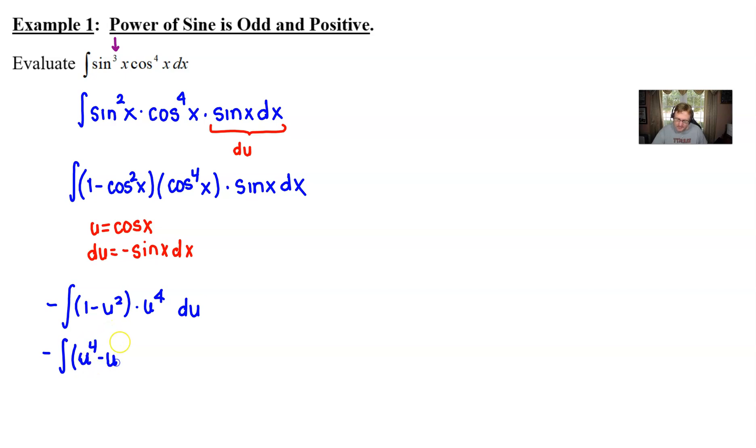Very easily we can take that anti-derivative I'm going to put the negative out in front here so that I can make sure that it applies to both terms integrating u to the fourth is of course u to the fifth over five drop the minus integrate u to the sixth is u to the seventh over seventh you've got your plus c the only thing that you need to do is back substitute.